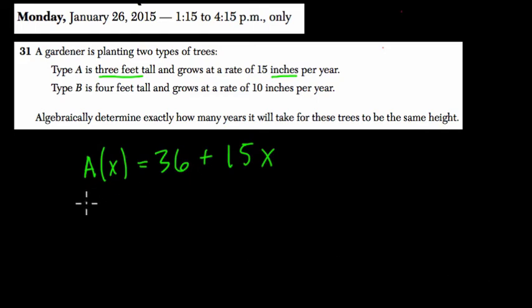Now type B, we'll call it B based on also years X, is four feet tall. So it's four times 12, 48 inches, plus 10 inches per year.